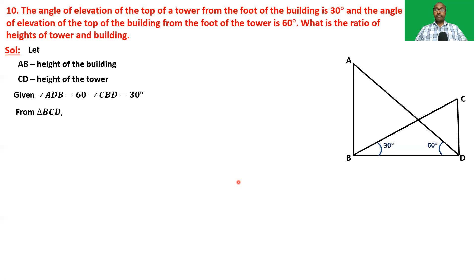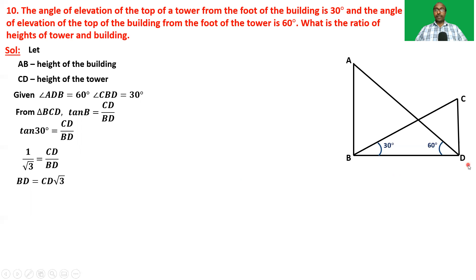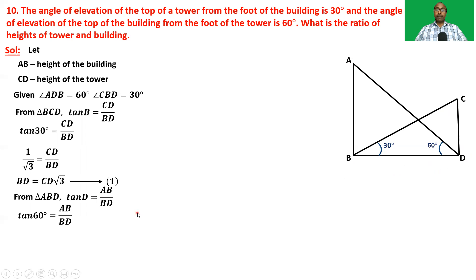From triangle BCD, tan B equals CD by BD, that is tan 30° equals CD by BD, so 1/√3 equals CD by BD, giving BD equals CD × √3. Take this as equation one. From triangle ABD, tan D equals AB by BD, that is tan 60° equals AB by BD, so √3 equals AB by BD, giving BD equals AB by √3. This is equation two.